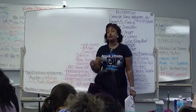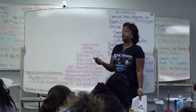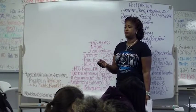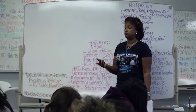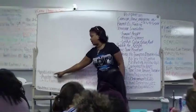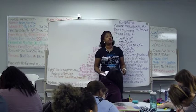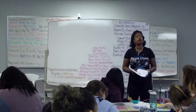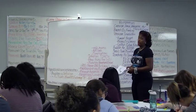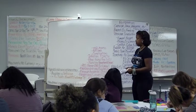Babies that have cephalohematomas may have gotten them from forceps, vacuums, scalp electrodes, or some other invasive trauma. So the baby can have a hyperbilirubinemia from a multitude of reasons — it could be a cephalohematoma, ABO incompatibility, Rh sensitization because mommy is Rh negative, or trauma to the presenting part of the head.